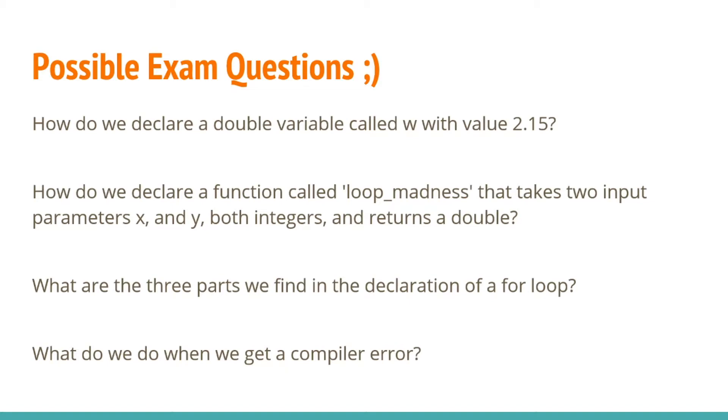Everything else we will see as we write code and it will become more clear there. Let's go over some possible exam questions. How do we declare a double variable called w with a value of 2.15? Let's go over this. We first read the word double and we know that will be our data type.